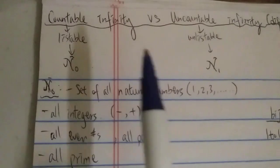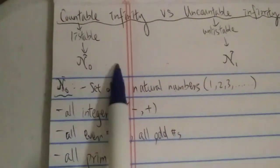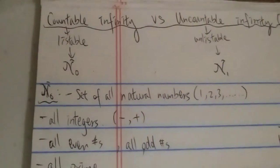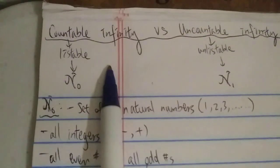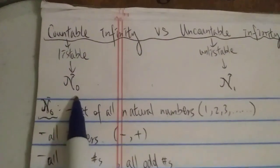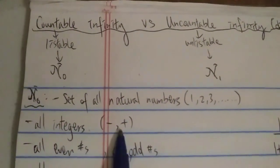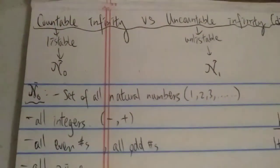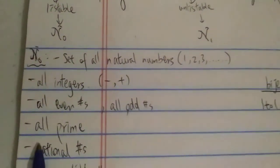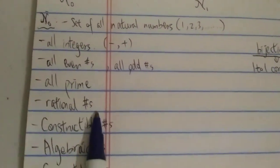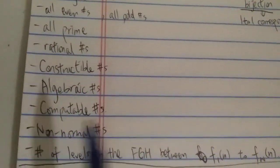ℵ₀ is the smallest size of infinity. One example is the set of all natural numbers: 1, 2, 3, 4, 5... all the way to infinity. ℵ₀ is the most basic form of infinity — when non-math people talk about something infinite in size, they're most likely talking about ℵ₀. Other examples include all the integers, all even numbers, all odd numbers, all prime numbers, all rational numbers, all constructible numbers, all algebraic numbers, all computable numbers, and the set of all non-normal numbers.